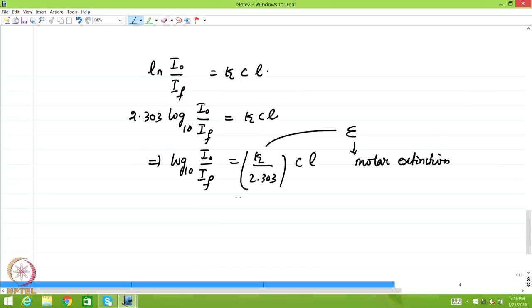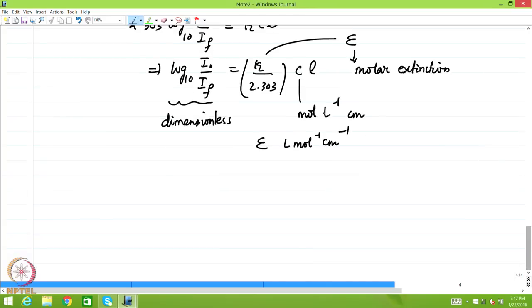And by dimension please remember this is dimensionless because they both refer to intensities. So the left hand side is dimensionless, right hand side is moles per liter and usually L is expressed in centimeter, therefore epsilon is liter per mole per centimeter. And at low concentrations and low intensities, epsilon's are additives.